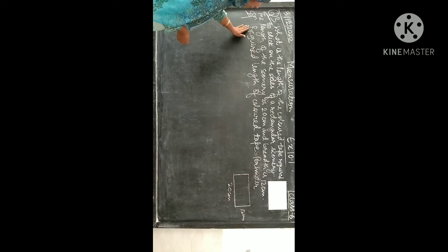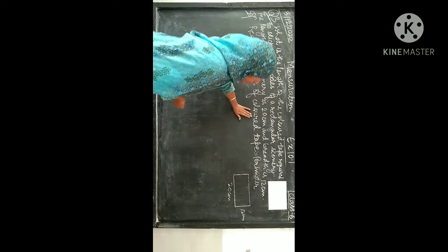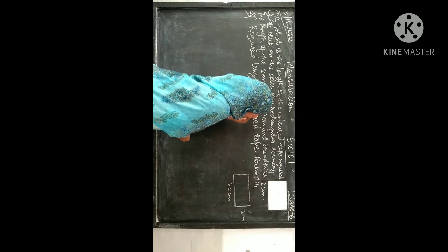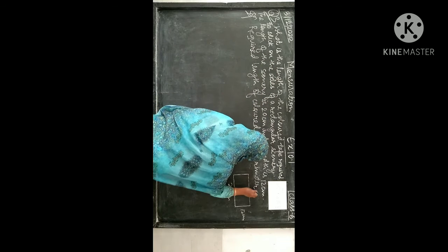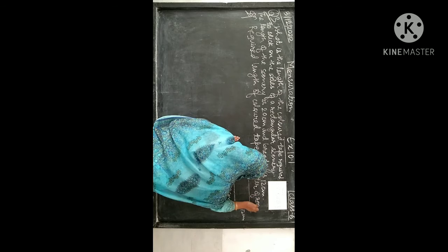Aap ko ye pura likhna padega - required length of the color tape. Aap ko ye nikalna hai. Required length tab milegi jab aap iska perimeter nikalenge, perimeter of rectangle.